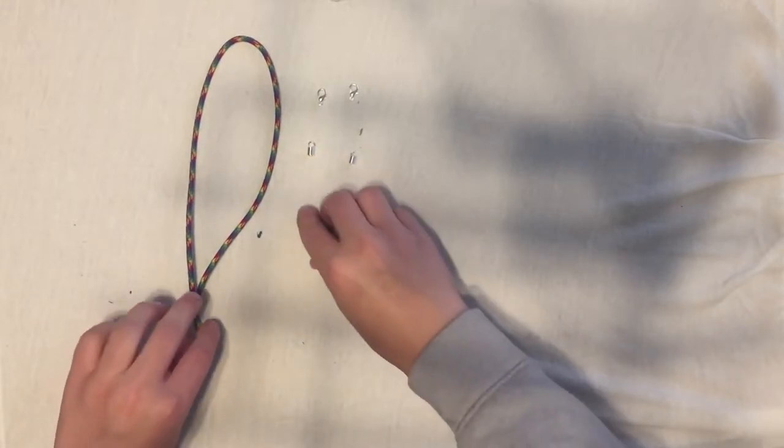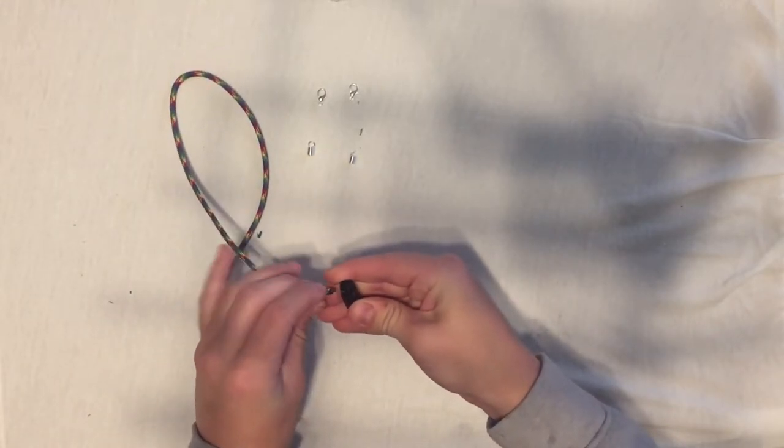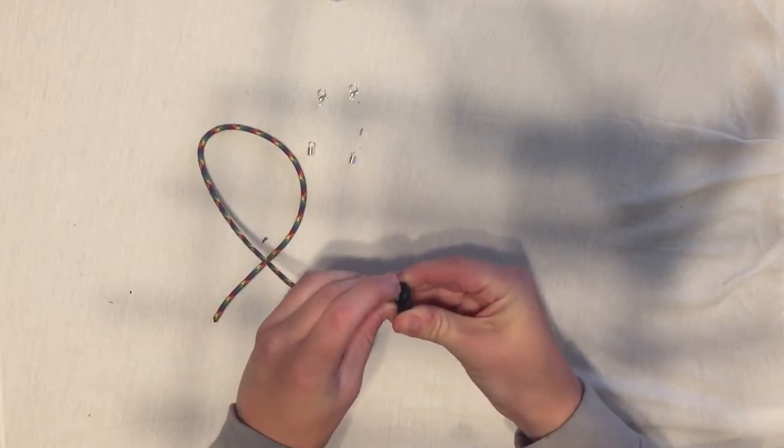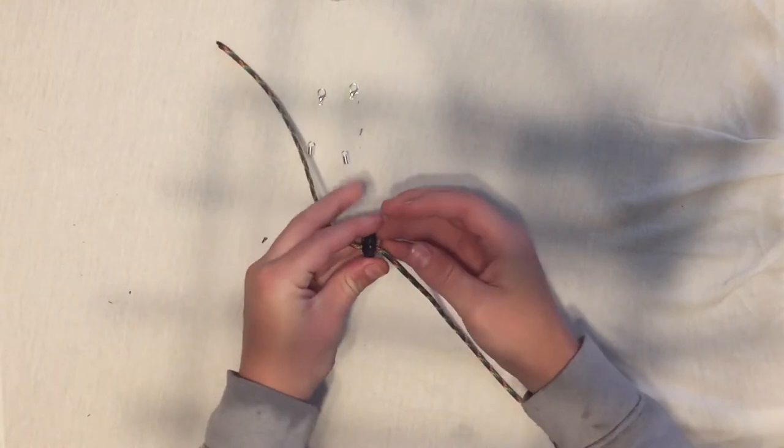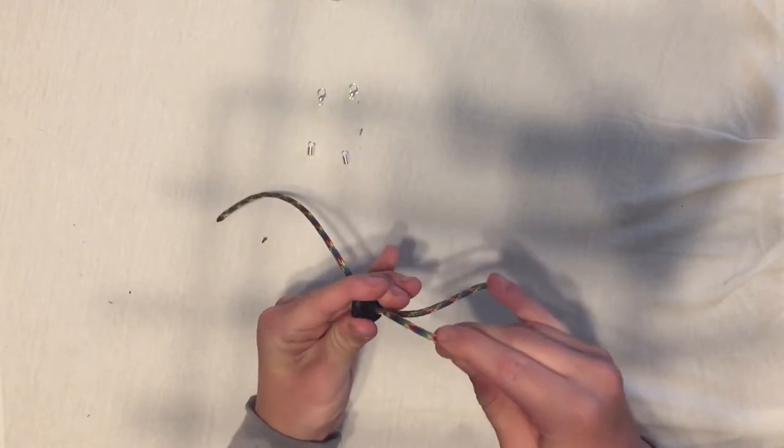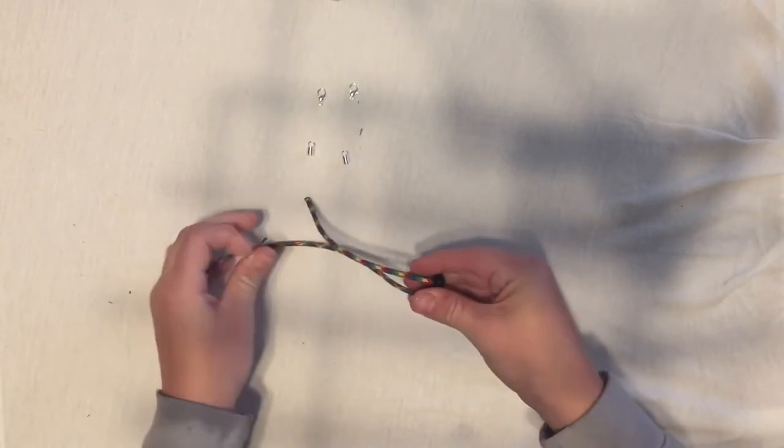All right, the first step: first things first, you need to go ahead and put the paracord through the spring loop like that and make sure they're even.